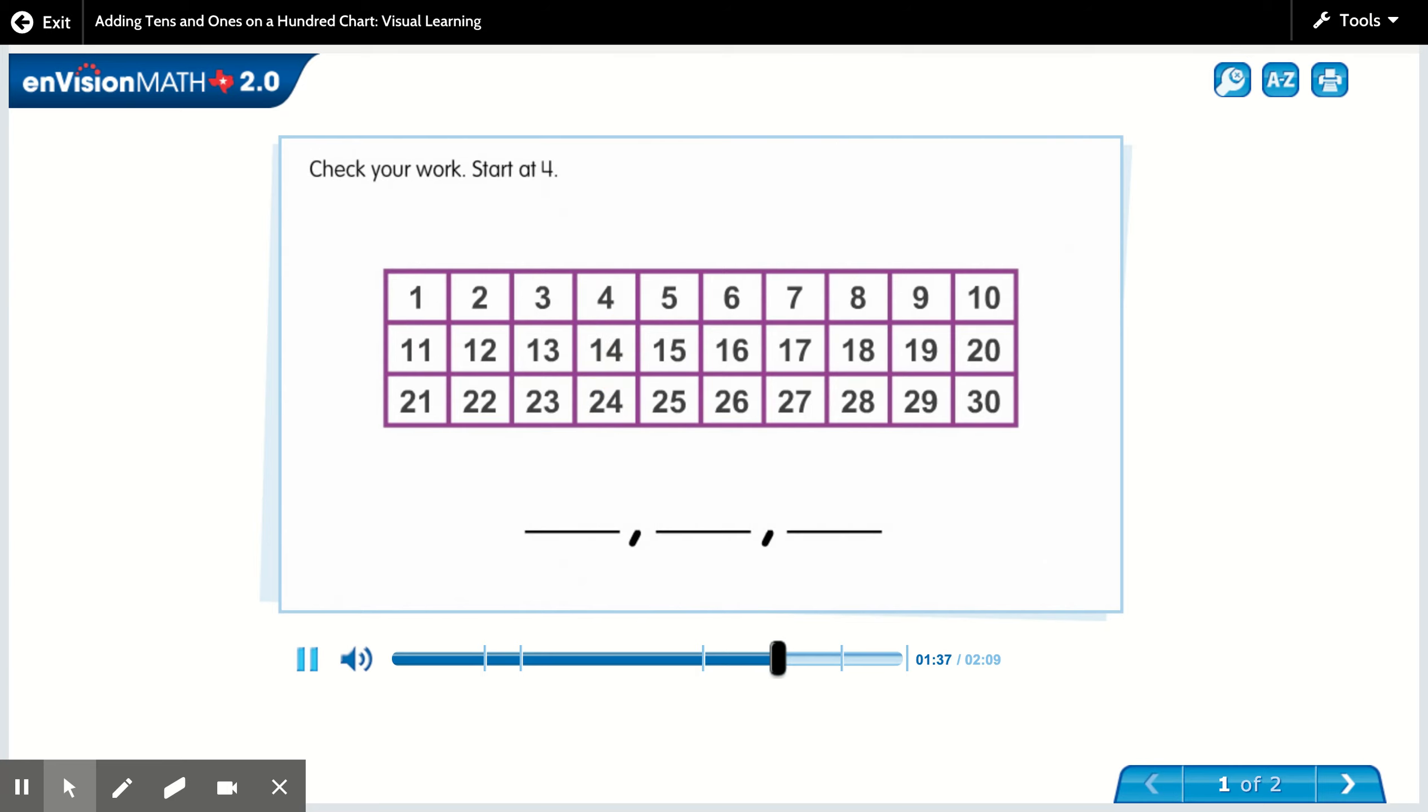Check your work. Start at 4, skip count by tens. You count 14, 24.